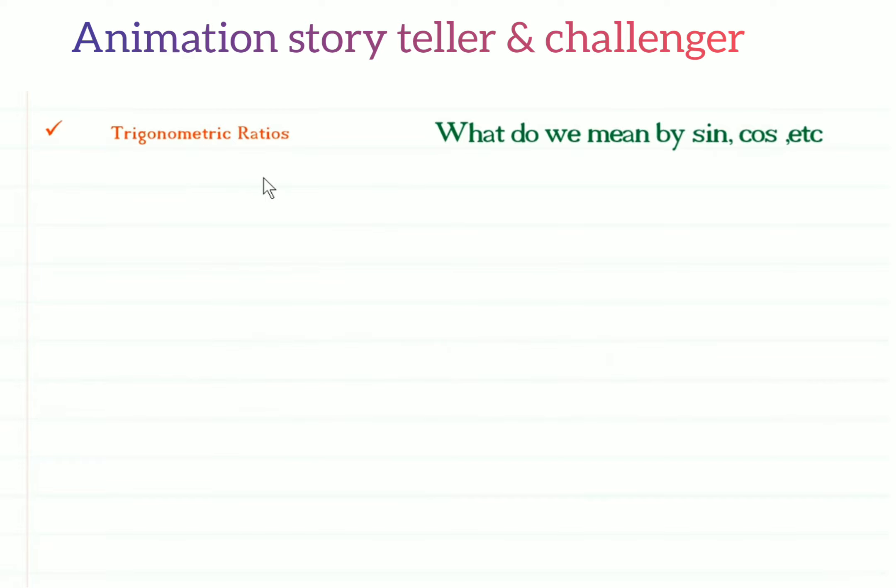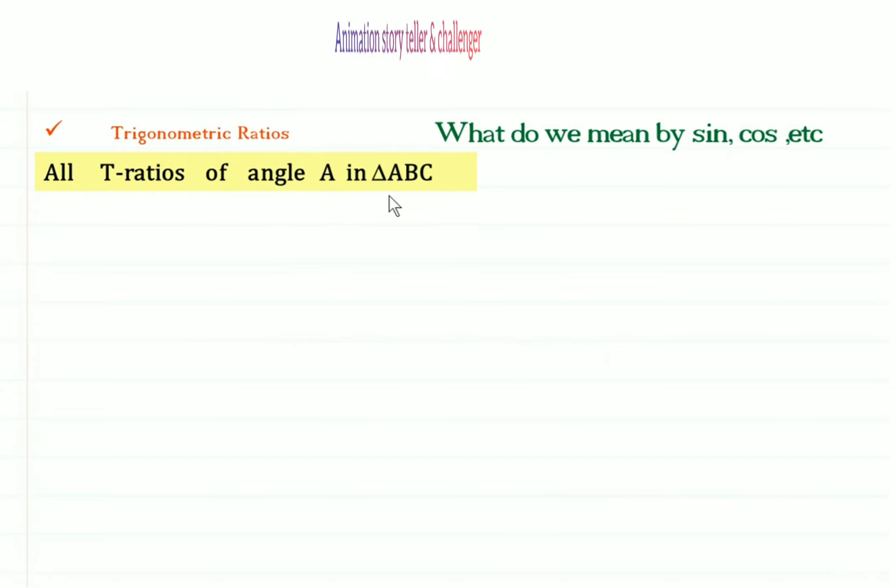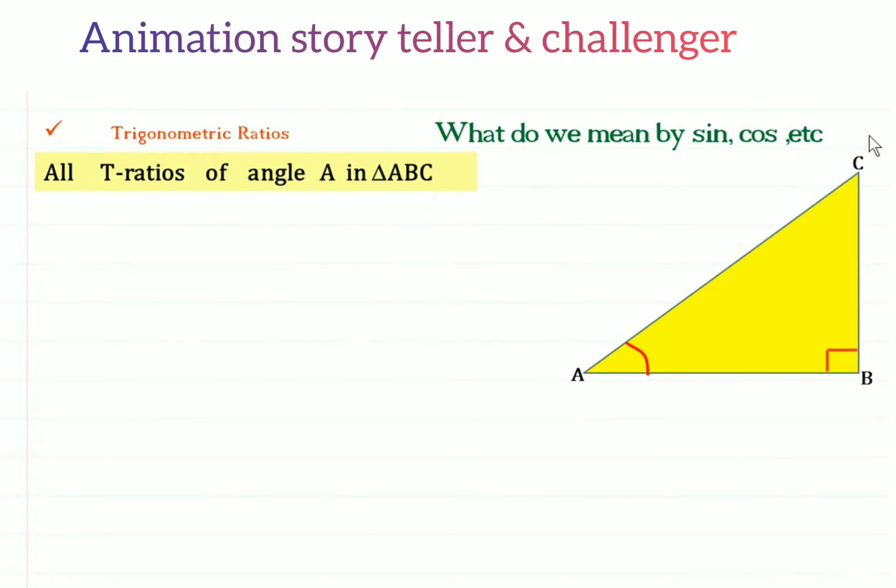Students, now we shall study how T-ratios are defined, that is, what do we mean by sine, cos, etc. For this, we shall define all T-ratios of an angle A in triangle ABC. So in triangle ABC...